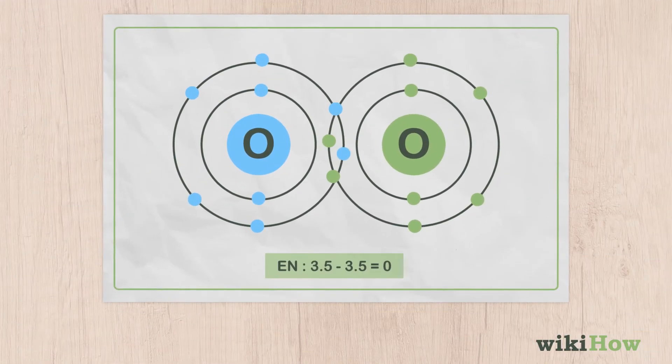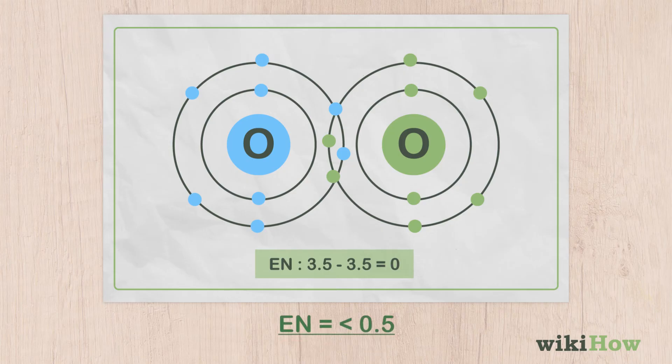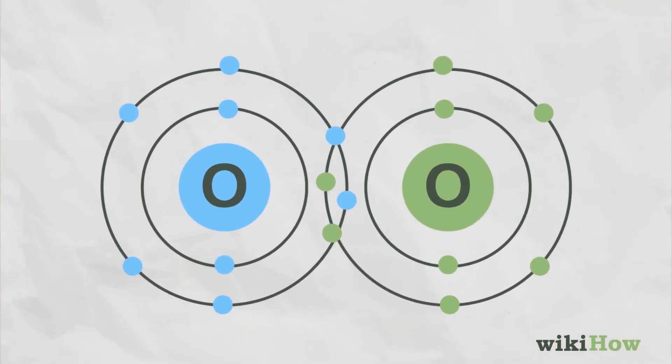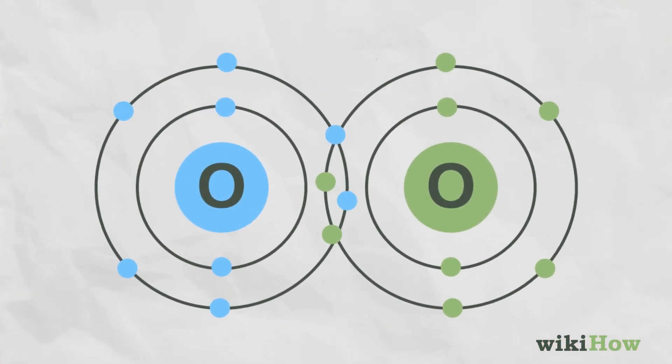In molecules where the difference is less than 0.5, the bond is nonpolar covalent. This is a strong type of bond that takes a lot of energy to break.